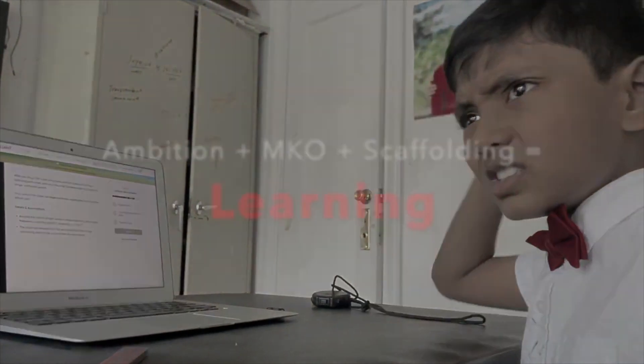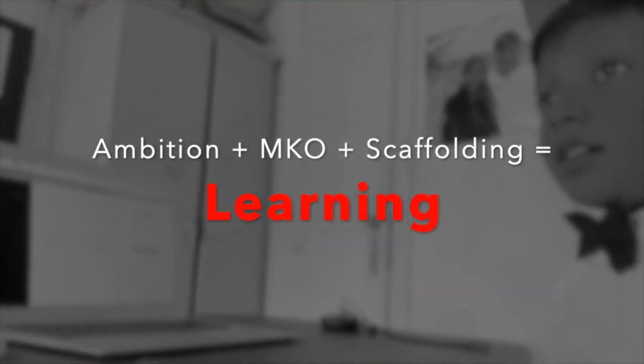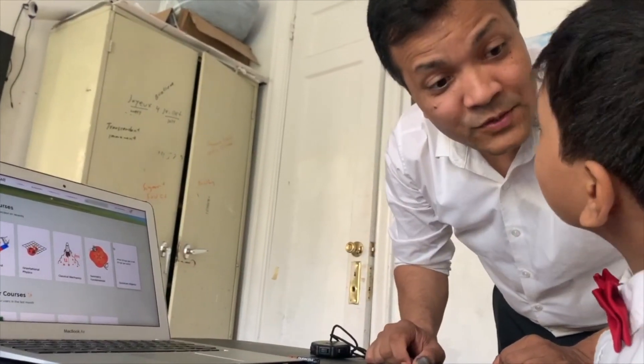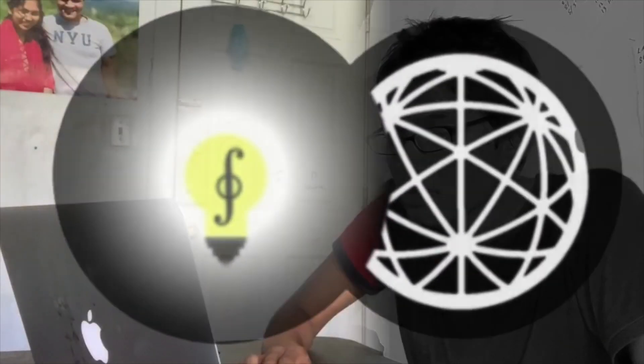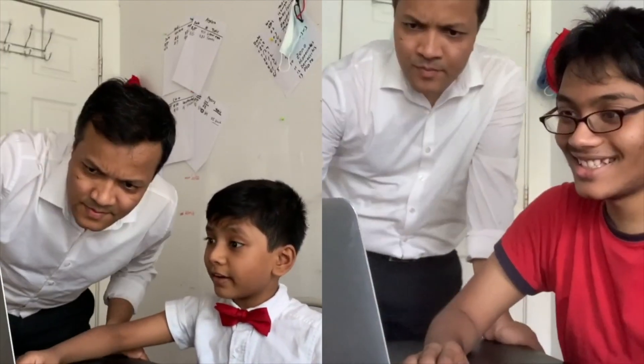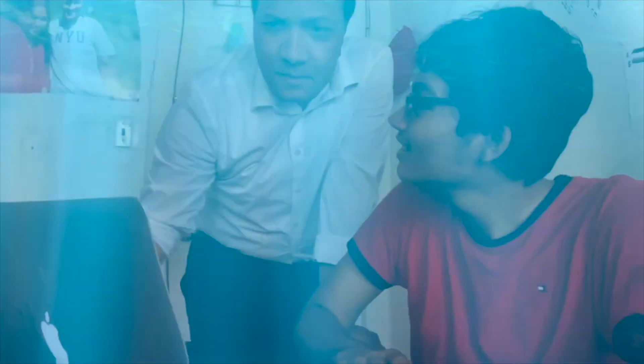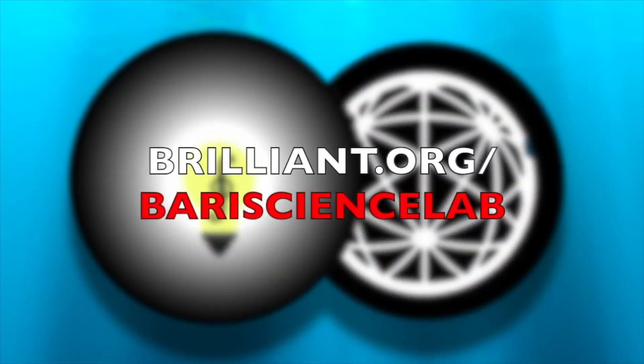Ambition plus MKO plus scaffolding equals learning. We believe anyone can learn anything. That's why our motto is 'memorization is a crime.' And that's why we partnered with Brilliant. Brilliant transforms math and science into hands-on activities so that you too can understand everything from first grade math to E=MC². Bari Science Lab and Brilliant is your MKO and will give you the scaffolding to expand your ZPD until you become the next Sir Isaac Newton or Albert Einstein. Visit brilliant.org/barysciencelab today. The first 50 of you to use that link will get a 20% discount on the Brilliant annual subscription. Don't forget that you too can become the next Einstein. So let's fall in love with math and science.